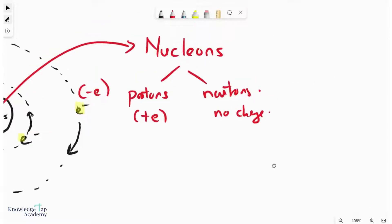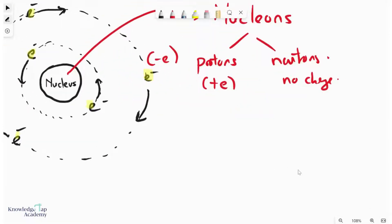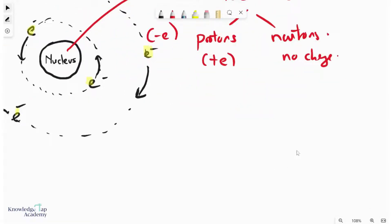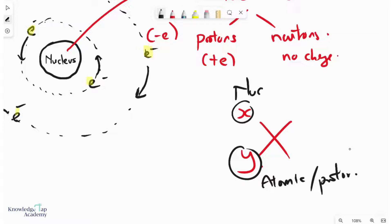So when we look at any kind of nucleus, there is always a nuclear notation. This will be the chemical symbol of the element or the atom, and it comes with two numbers. Let's call them X and Y. So what we call this is the atomic number or the proton number, and this is the nucleon number, or sometimes we call it the mass number.